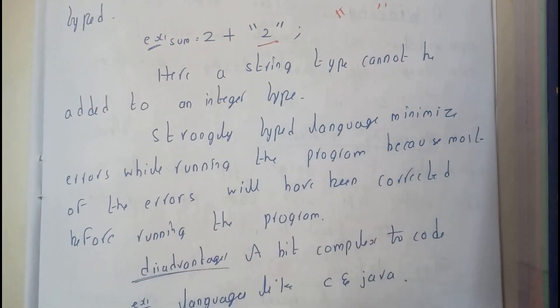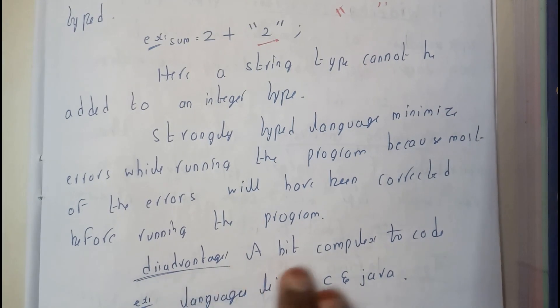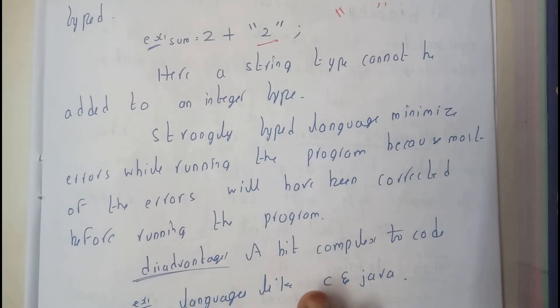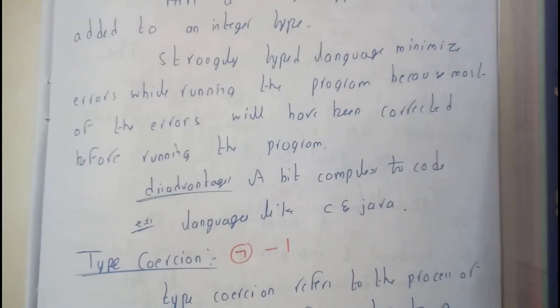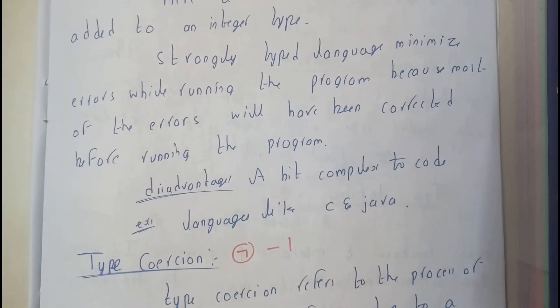The disadvantage is coding is a bit complex. Languages like C, C++, and Java have strong typing. In the next tutorial, we will be going to type coercion. Thank you, thanks for watching.